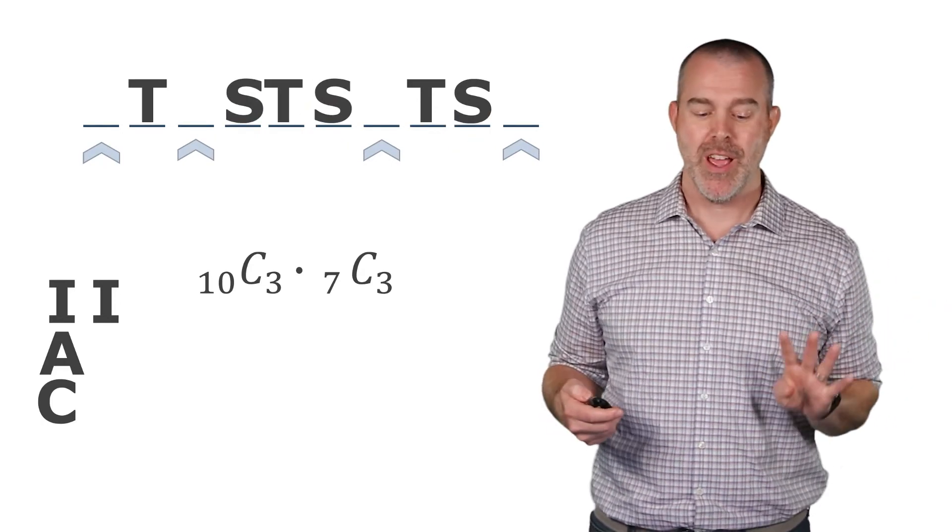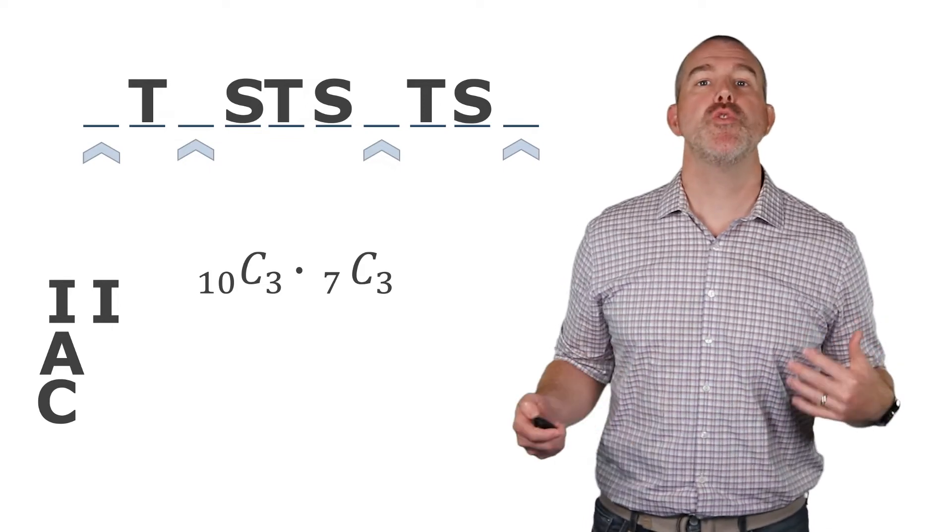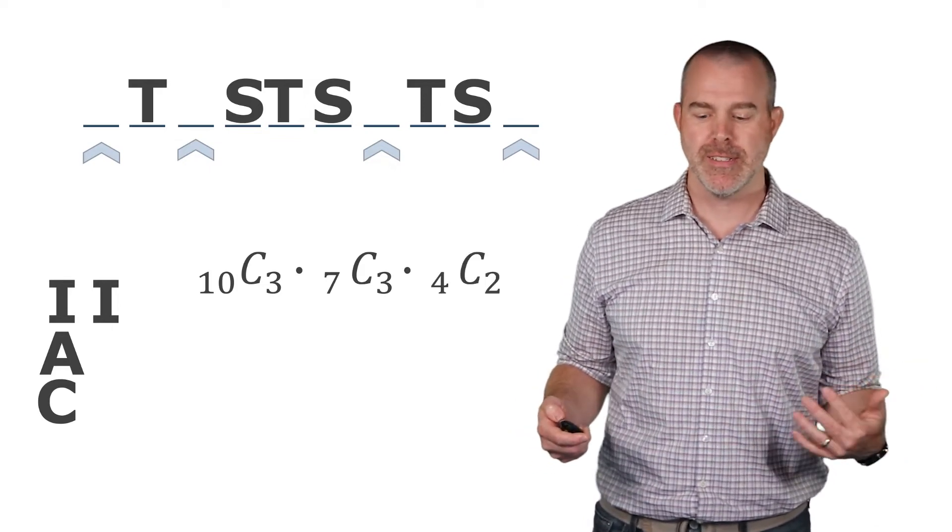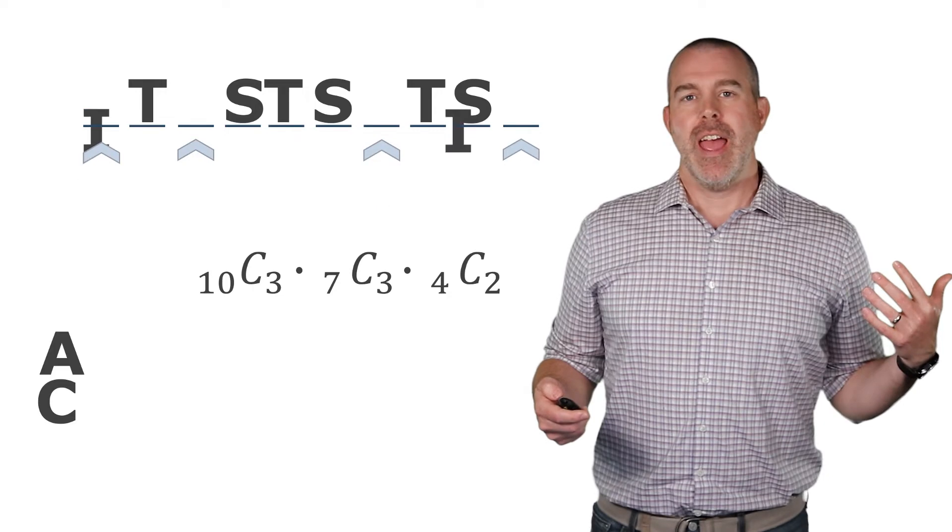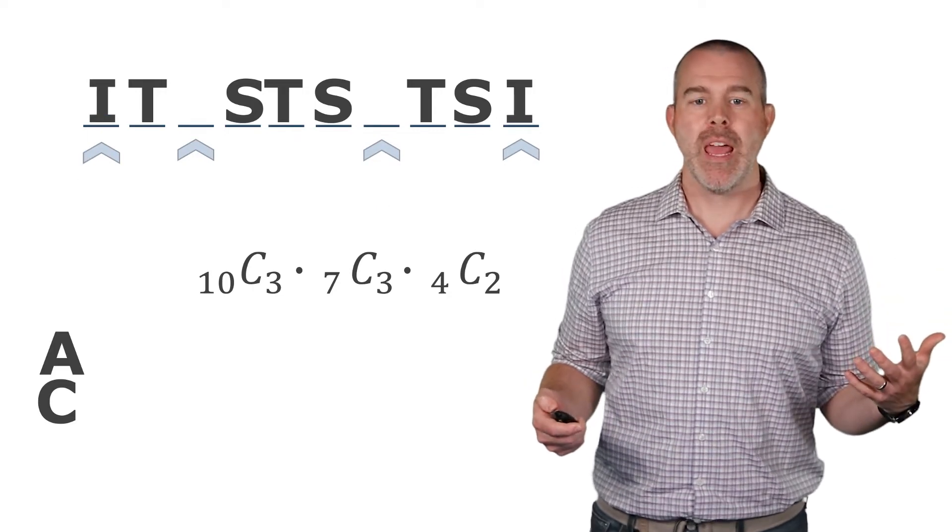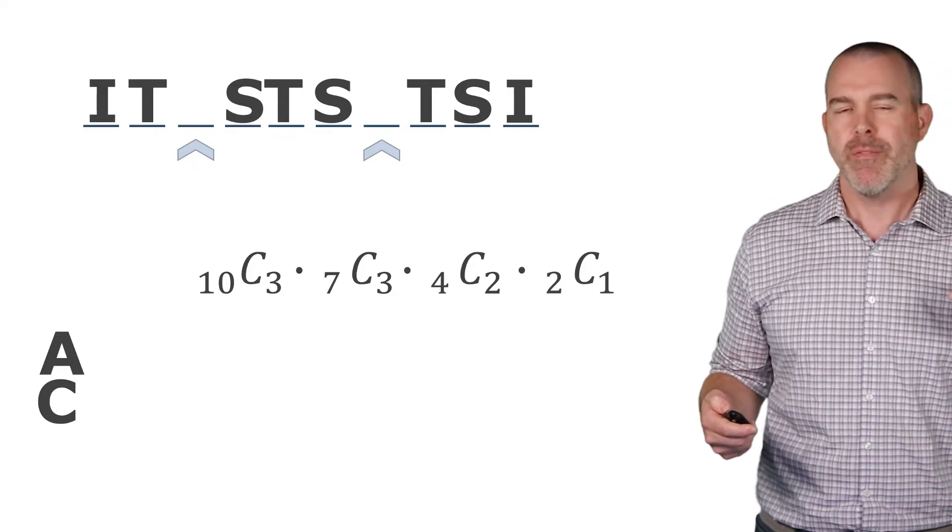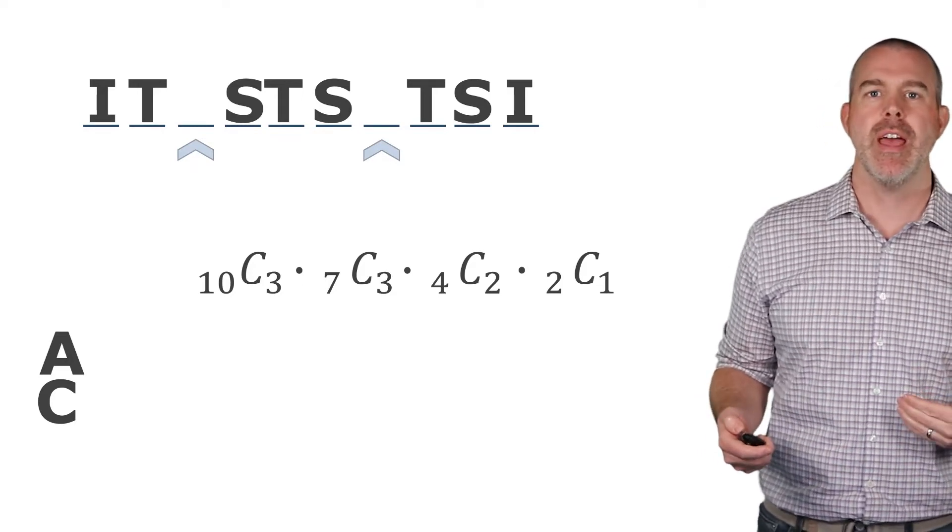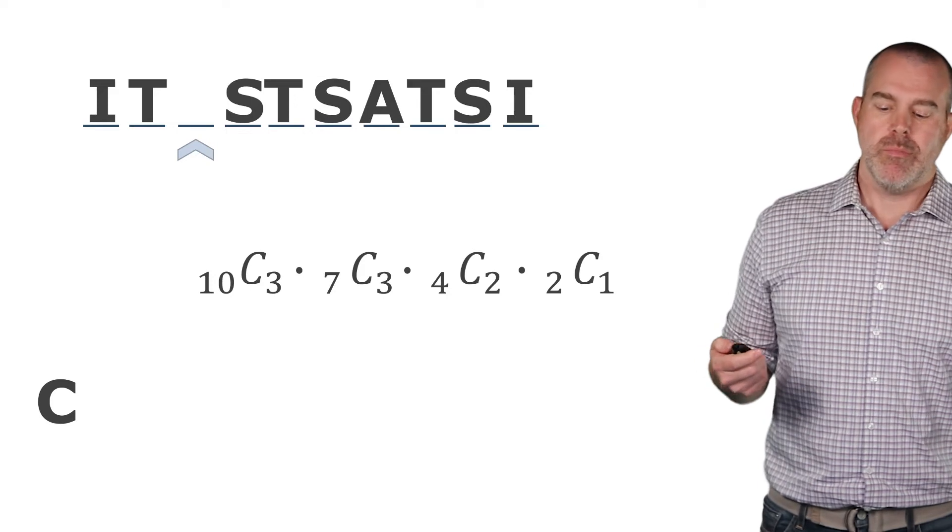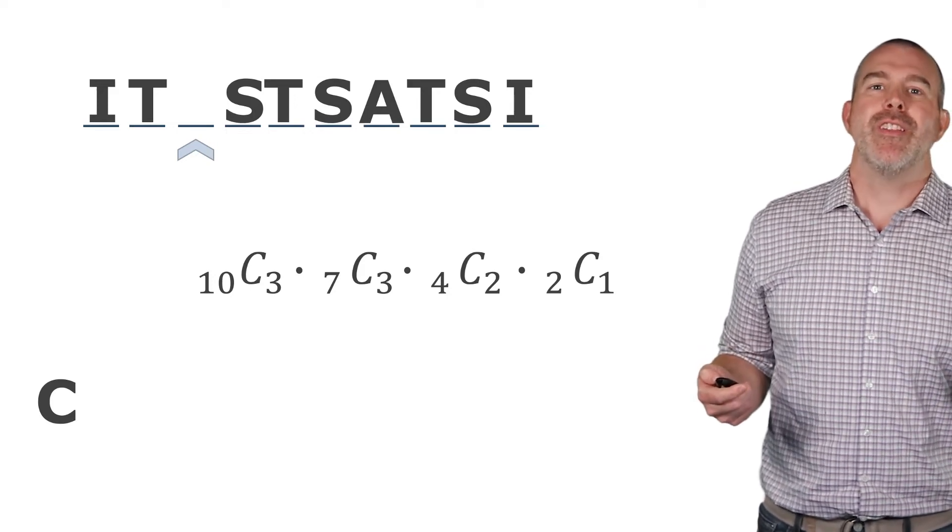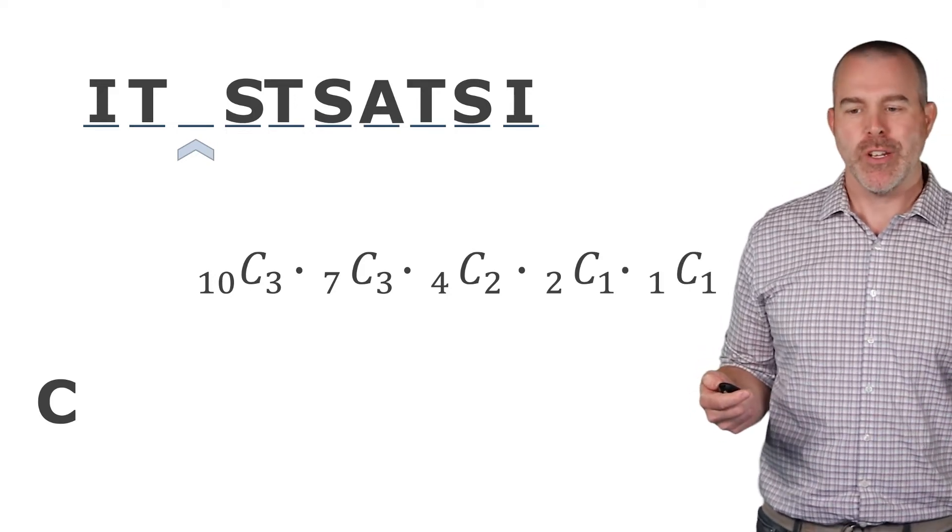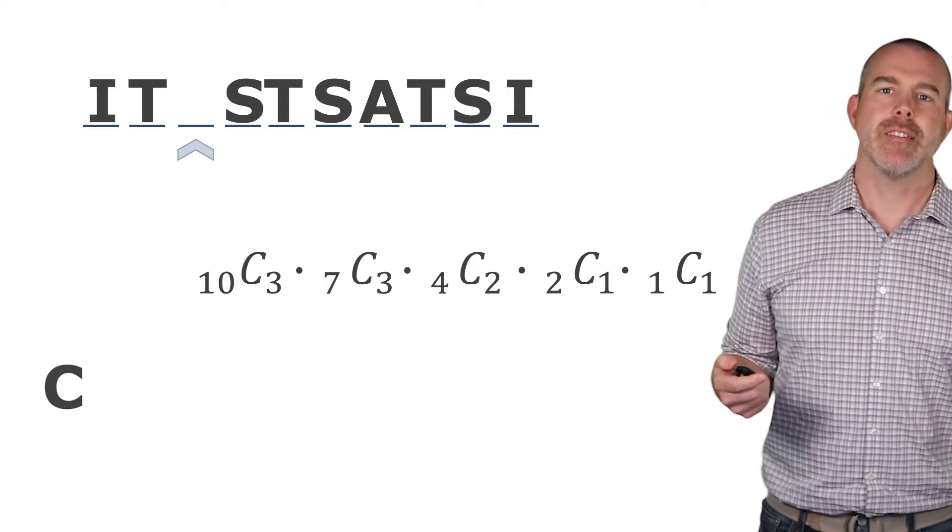Okay, there's four spots left. From those four, we want to choose two to put the Is. And then from the two remaining, we want to choose one to put the A. Now, really, that's just, there's two choices there, but we're going to follow the pattern here, 2C1. And then lastly, 1C1. From the one remaining spot, we want to choose one spot for it. So that's the C.